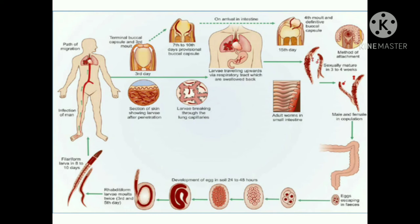When it penetrates the human skin, it travels to the blood vessels, to the heart, and reaches the lungs. Once there, it burrows through the pulmonary alveoli and travels up to the trachea. When it is swallowed and carried to the small intestine, it attaches to the intestinal wall and matures into adults and begins reproduction. Adults live in the lumen of the intestinal wall, where they cause blood loss to the host. The eggs produced by the adults end up in soil after leaving the body through the host's feces.